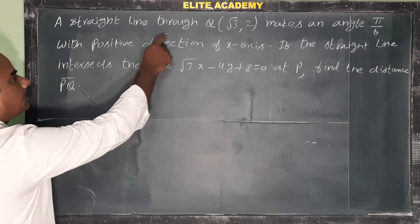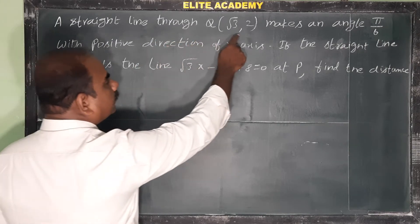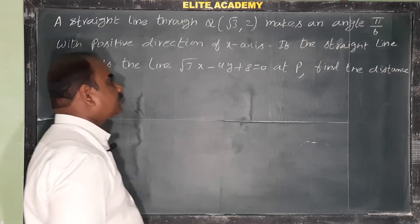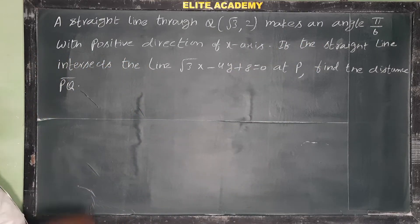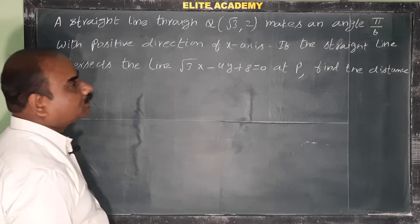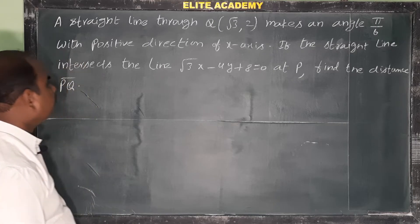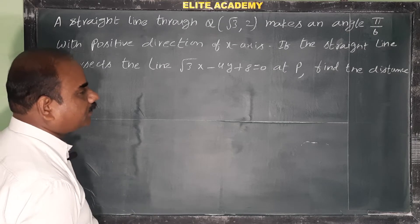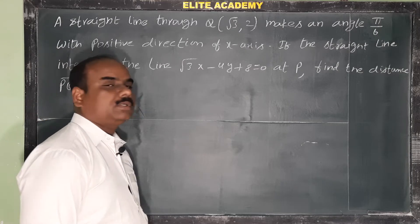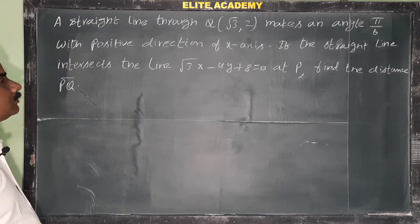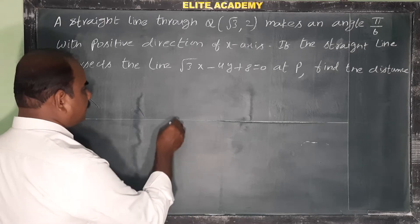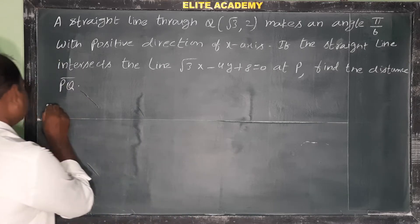A straight line through Q(√3, 2) makes an angle π/6 with the positive direction of the x-axis. If the straight line intersects another line √3x - 4y + 8 = 0 at point P, find the distance PQ. So we need to find the distance between points P and Q. Let's look at the solution.